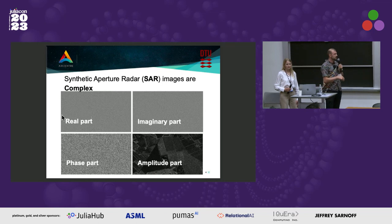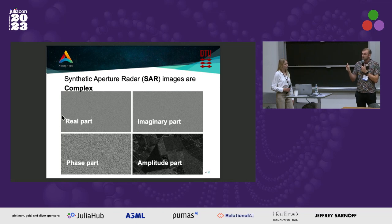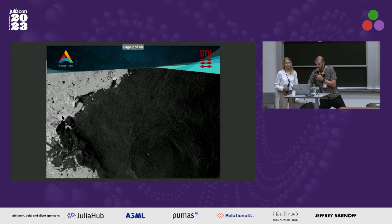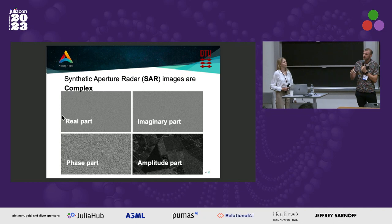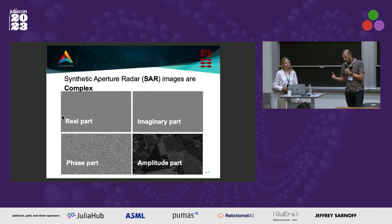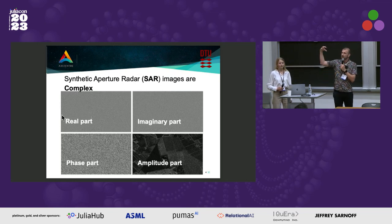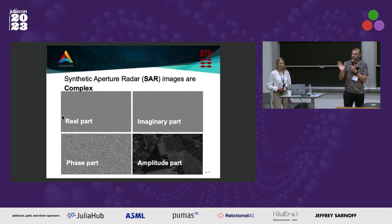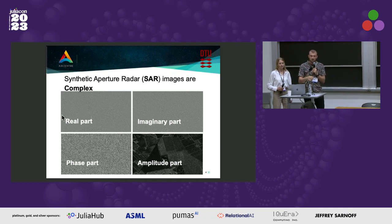SAR stands for synthetic aperture radar, and it's a type of sensor that you mount on board a satellite that creates an image. A SAR is an active sensor, meaning that it is not using the illumination of the sun like a regular camera — it provides its own illumination in so-called pulses. Electromagnetic radiation is transmitted through the atmosphere from the SAR satellite, hits the target, is scattered in different directions, and some of it goes back to the satellite.